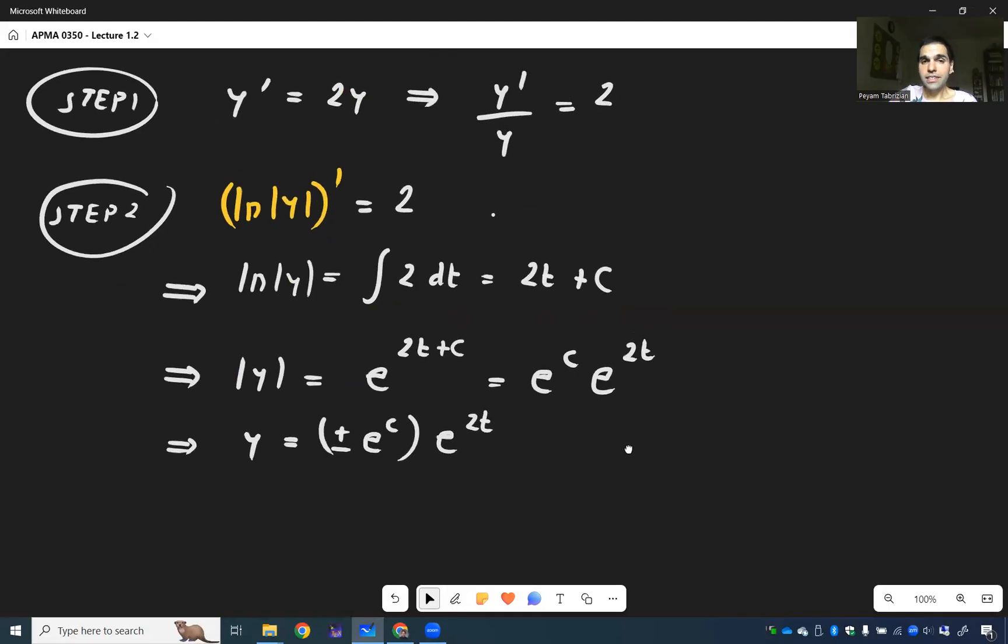Now, this is something that seems weird the first time, but we'll do so much of this in the remainder of the course. Namely, plus or minus e to the c is really just an arbitrary constant. If c can be anything, then plus or minus e to the c can be anything as well. So, we'll just replace this by c. Simply saying, this is an arbitrary constant.